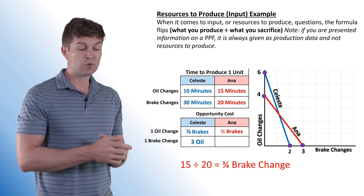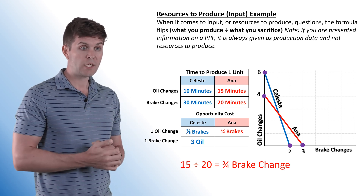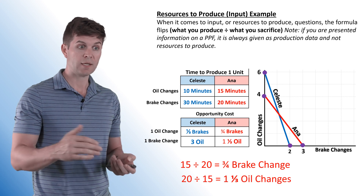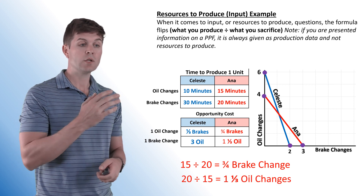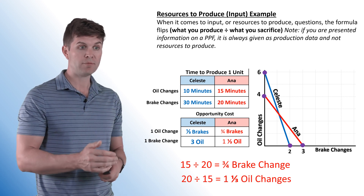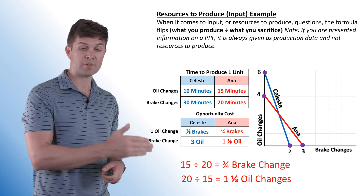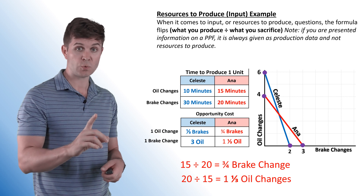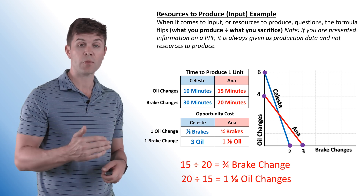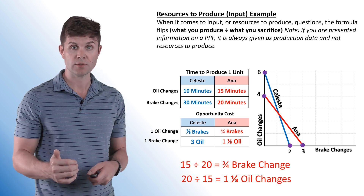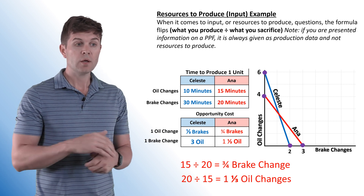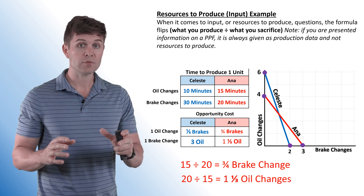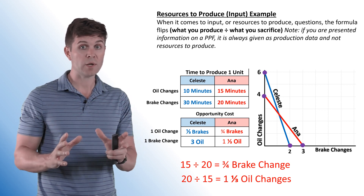For Anna: in the 15 minutes it takes her to do one oil change, she could do three-quarters of a brake change. Inversely, 20 divided by 15 — in the time it takes her to do one brake change (20 minutes) — she could do one and one-third oil changes. That gives you the opportunity cost for the input questions.